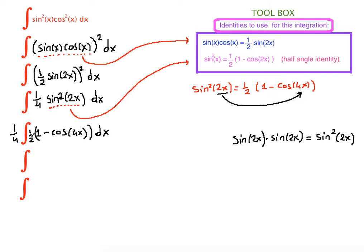We can pull the constant to the front. One fourth times one half is one eighth. And what is left is one eighth times (one minus cosine of 4x) dx.